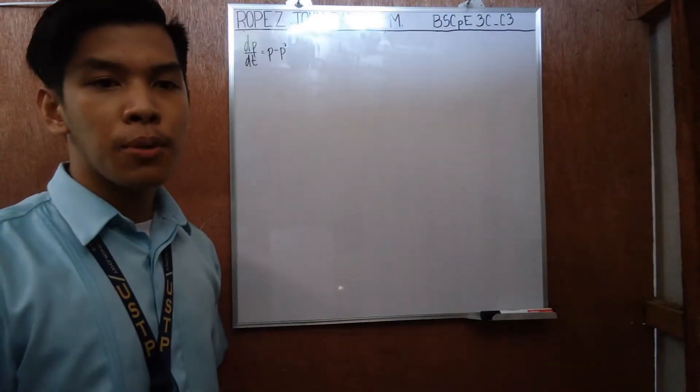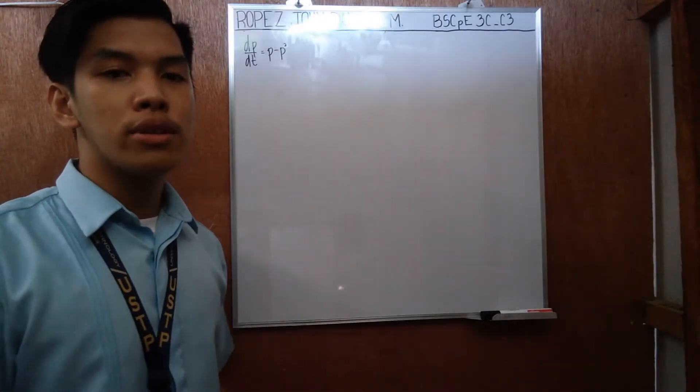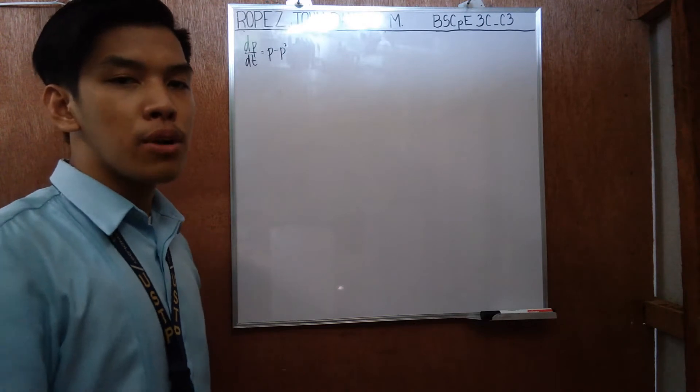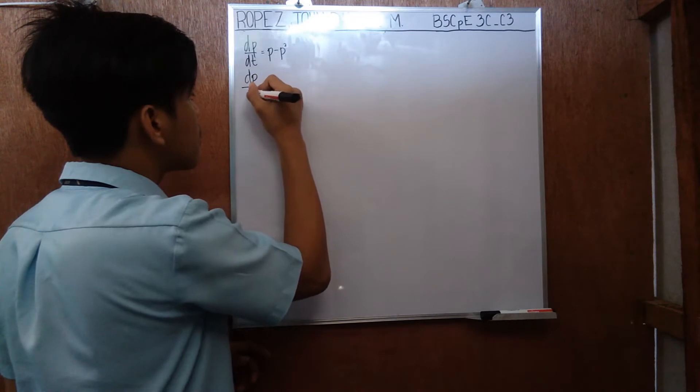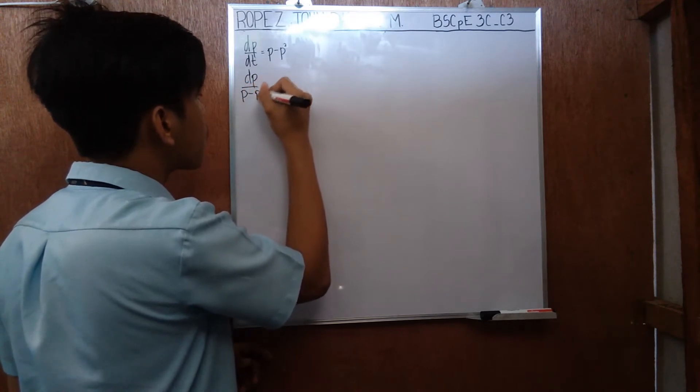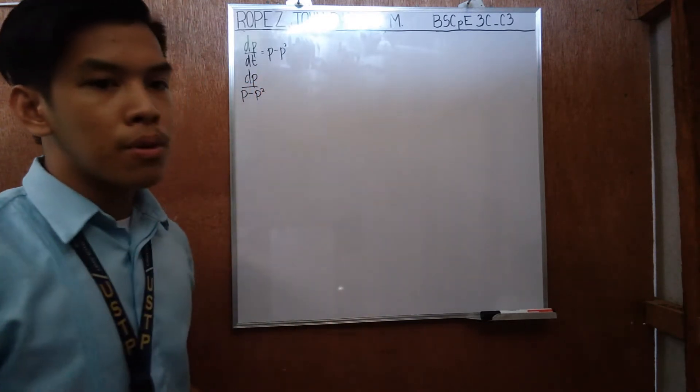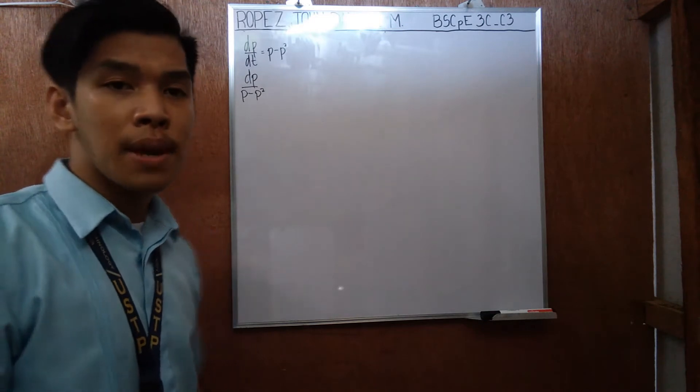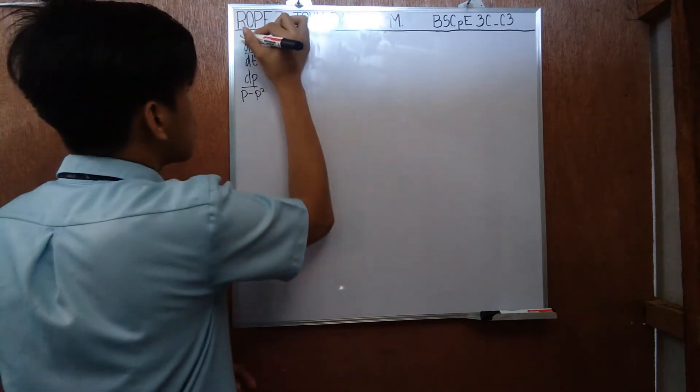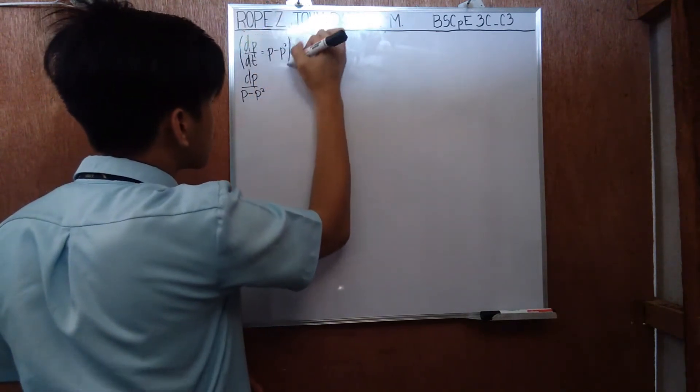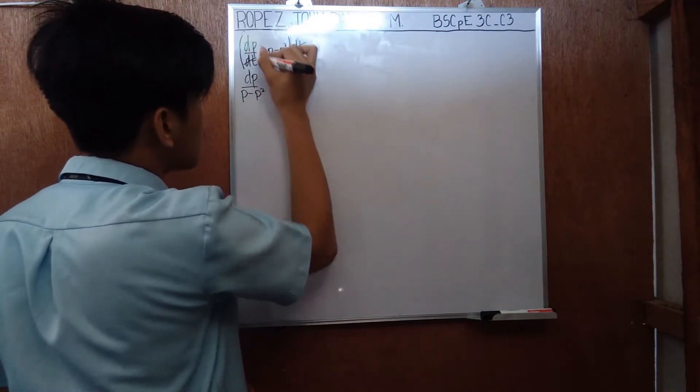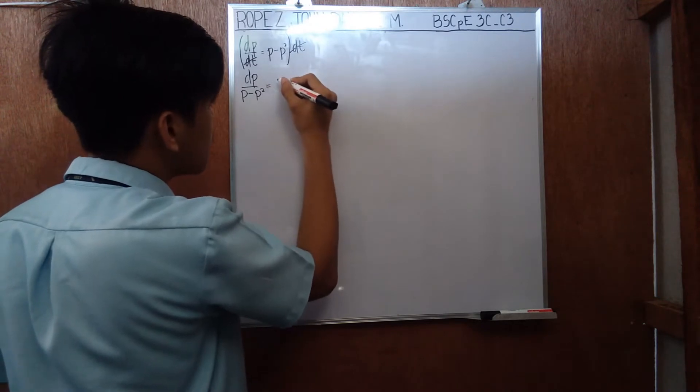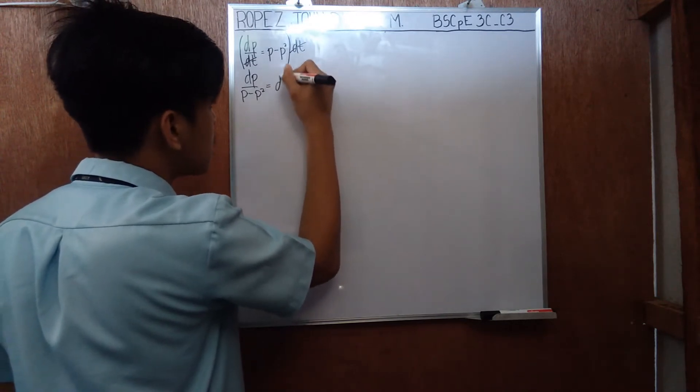This is a separable equation, so we can do the following. We're going to divide both sides by p minus p squared. And at the same time, we're gonna multiply both sides by dt and cancel out dt. So we have dp over p minus p squared is equal to dt.